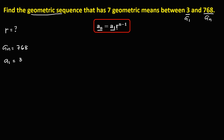R is the unknown common ratio, and n is the number of terms. Since we have 7 geometric means between the 2 given terms, n equals 2 plus 7, that's 9. So n is equal to 9 because this sequence has 9 terms.